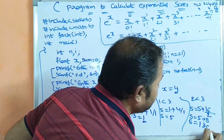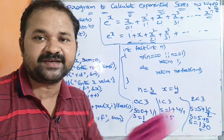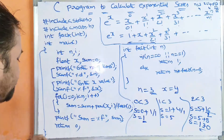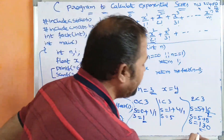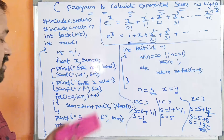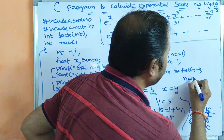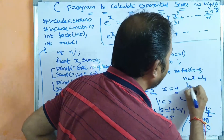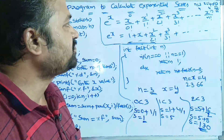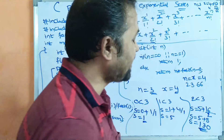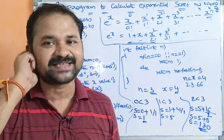Next, i becomes 3, and 3 less than 3 is false, so control exits the for loop. Printf prints sum with %f — sum is 13.0, so we get 13.0 as the result. Likewise, if n is 4 and x is 4, we will get 23.66 as the result. Now let us see the program execution to verify whether this logic is correct or not.